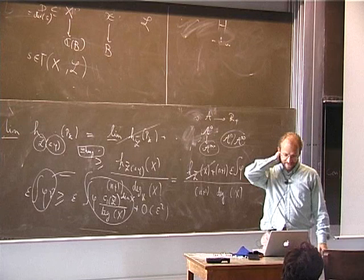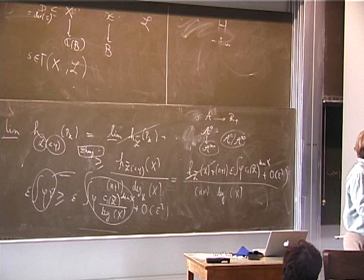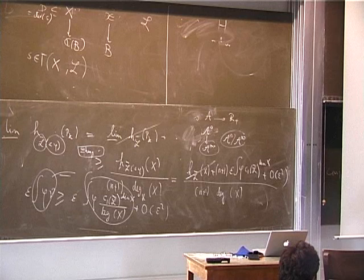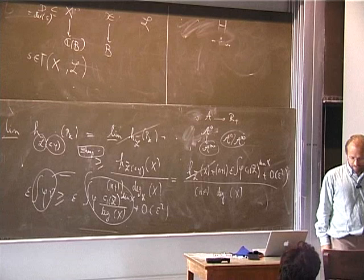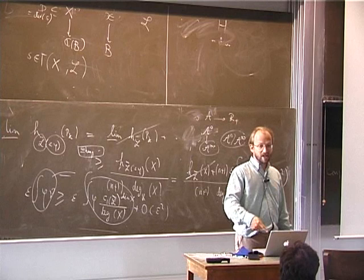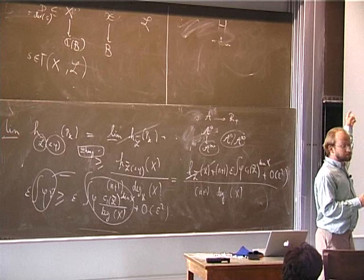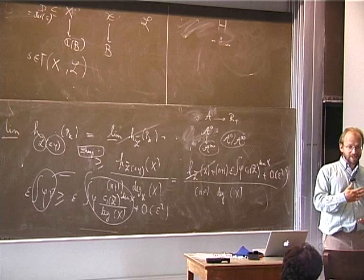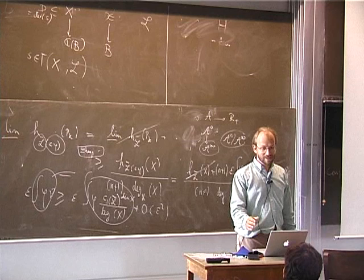This definition was inspired by a paper by Chambert-Loir, who was trying to do Arakelov geometry in a p-adic context. He used measures, but only finitely additive measures, not σ-additive measures. The Boolean algebra on which this finitely additive measure took place was the set of all affinoids. In some sense, his measures can be viewed on the Berkovich space as linear combinations of Dirac measures. That's why he could only have finite additivity — he could not sum infinitely many Dirac masses.